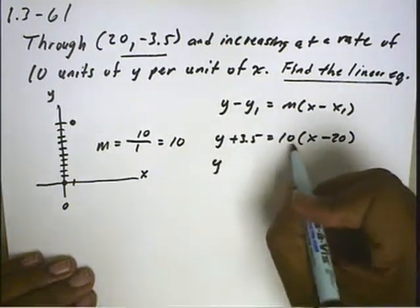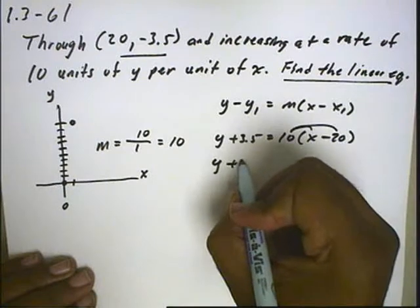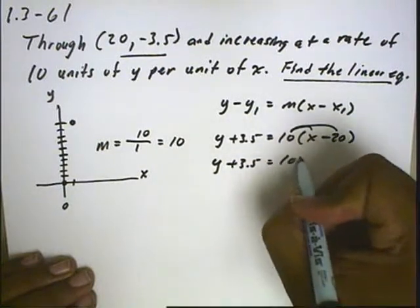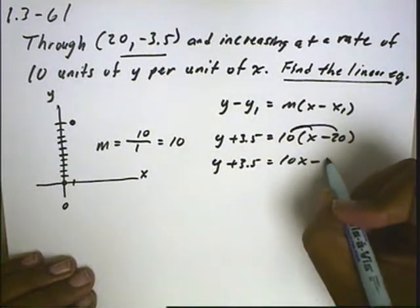So from here, we're going to distribute the 10, and we'll get 10x minus 200.